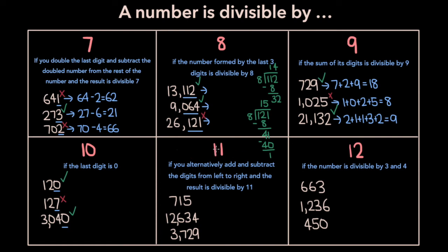Now let's move on to 11. A number is divisible by 11 if you alternately add and subtract the digits from left to right and the result is divisible by 11. For example, take the number 715: add the first digit — 7 — subtract the second — minus 1 — add the third — plus 5. This equals 11. 11 is divisible by 11, and so 715 is divisible by 11. Let's repeat the process for 12,634: 1 minus 2 plus 6 minus 3 plus 4. Working through that, we get 6. 6 is not divisible by 11, and so 12,634 isn't either.